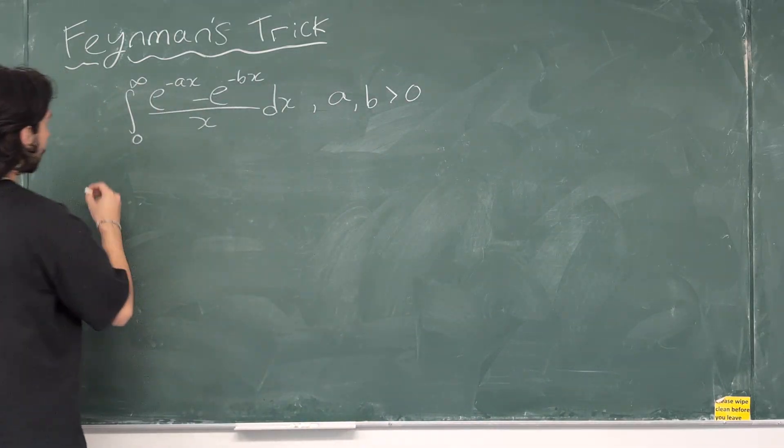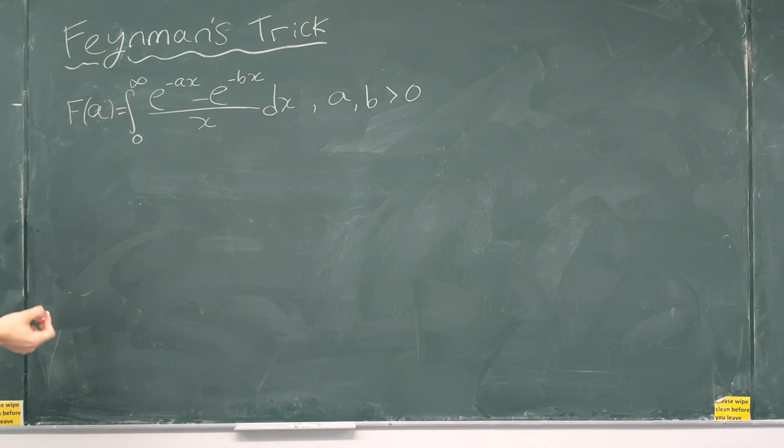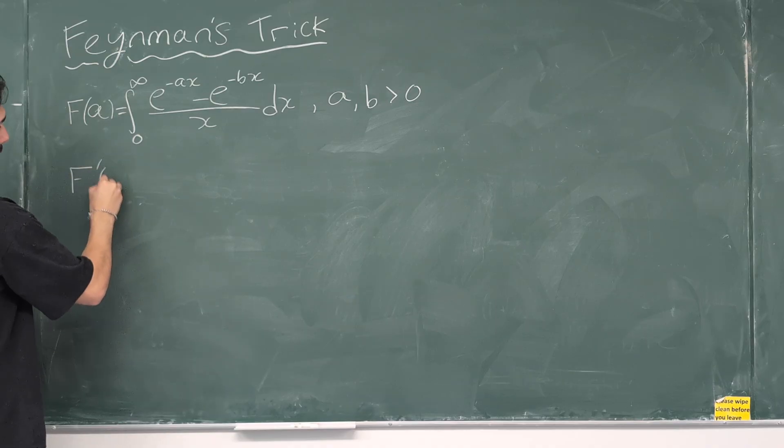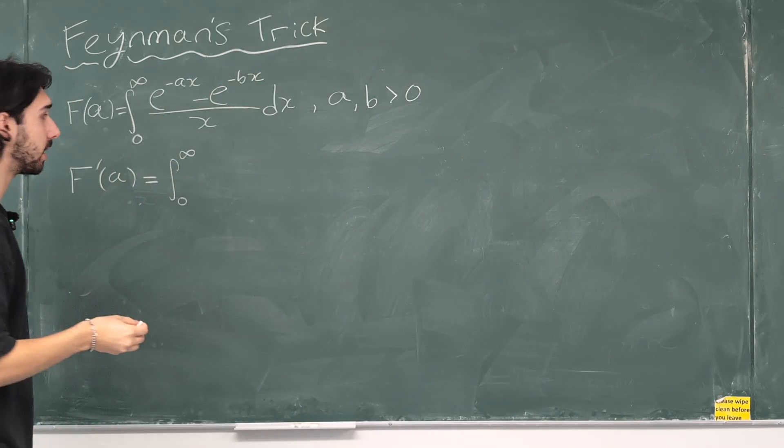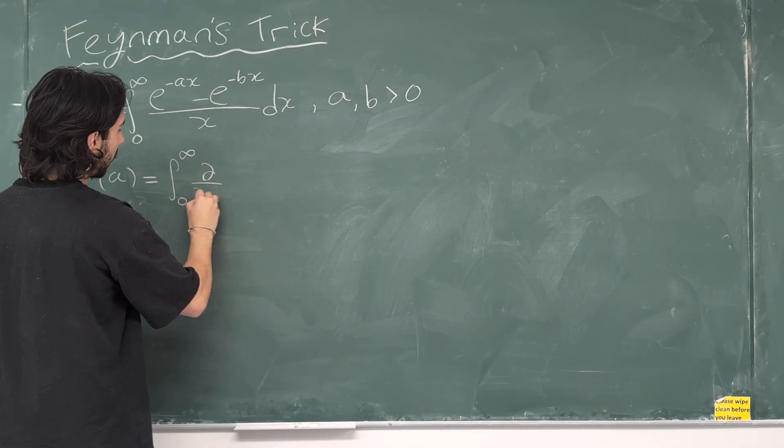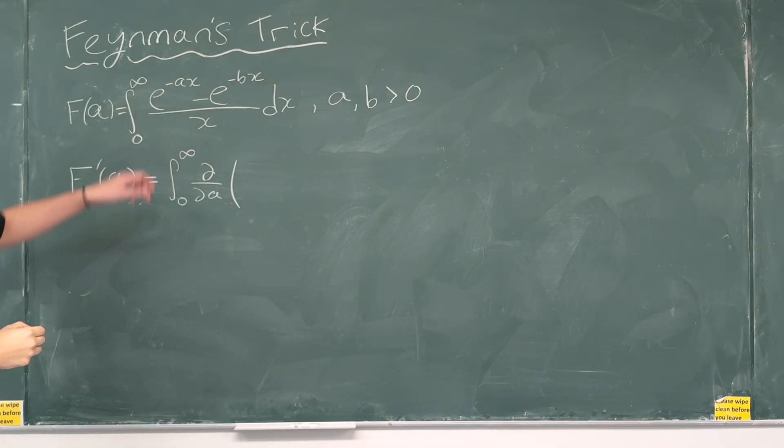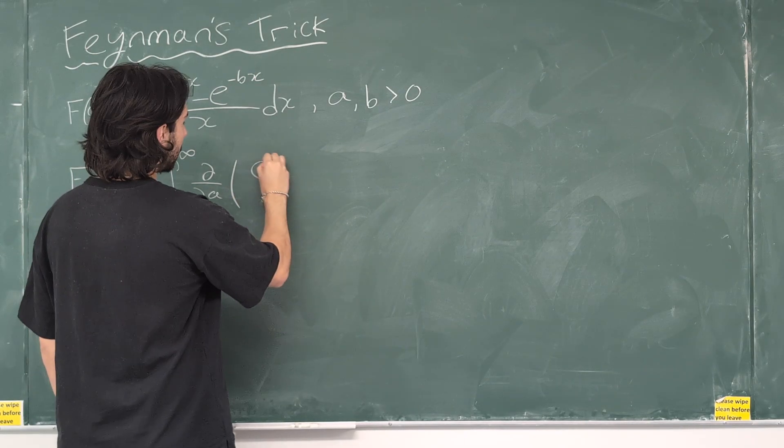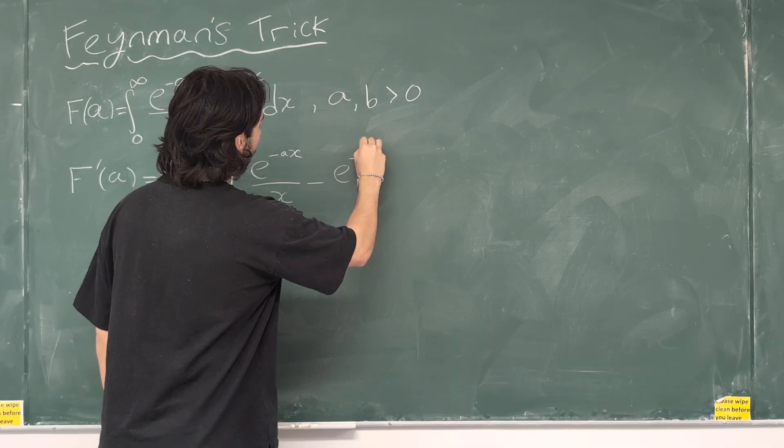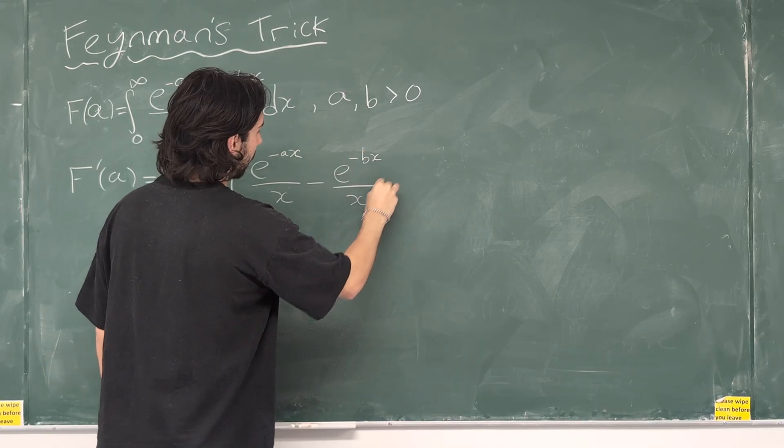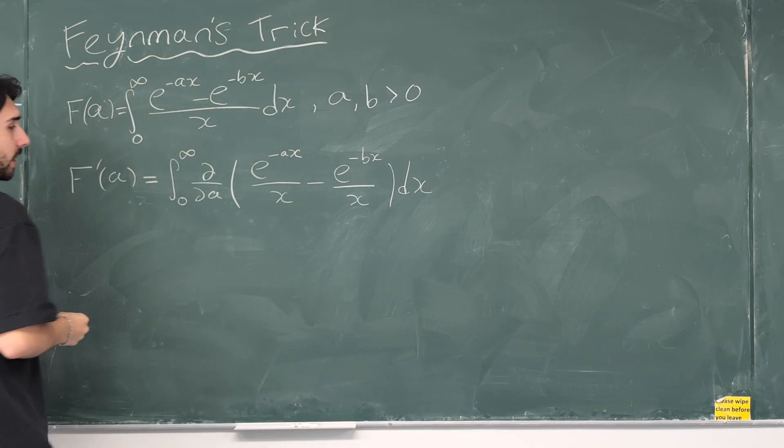I'm going to treat this integral as a function of a, f of a. Then, I'm going to differentiate it. So, the derivative of f of a is the integral from 0 to infinity. And before I actually differentiate it, let's just write down exactly what we're doing. We're going to take the partial derivative with respect to a of the inside. And again, I'm going to split this into two fractions to make it easier. So, this is e to the minus ax over x minus e to the minus bx over x dx. And we're saying a and b are greater than 0.